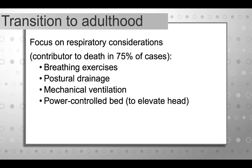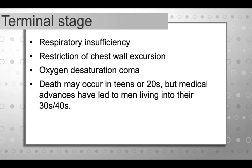In the terminal stage, respiratory insufficiency, restriction of chest wall excursion, and oxygen desaturation leading to coma is the course that often leads to death. Death for men with muscular dystrophy may occur in the teens or twenties, but medical advances have led to men now living into their thirties and forties.